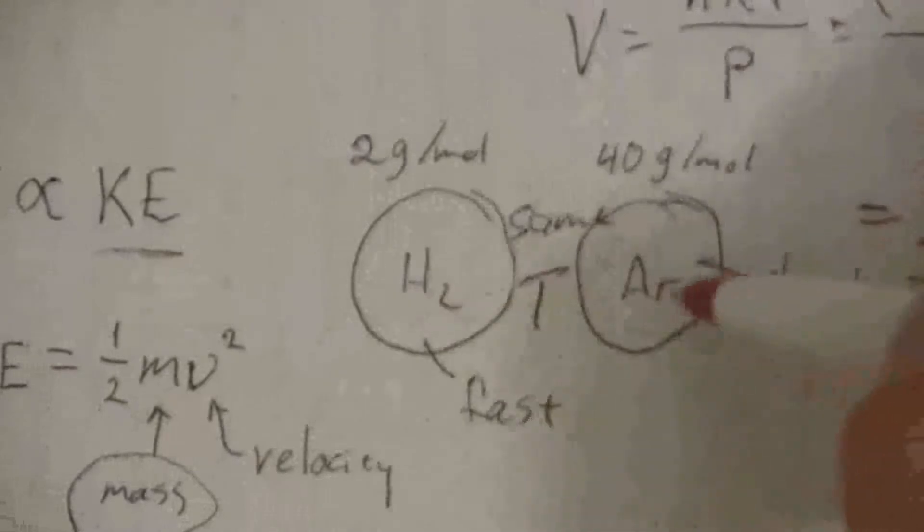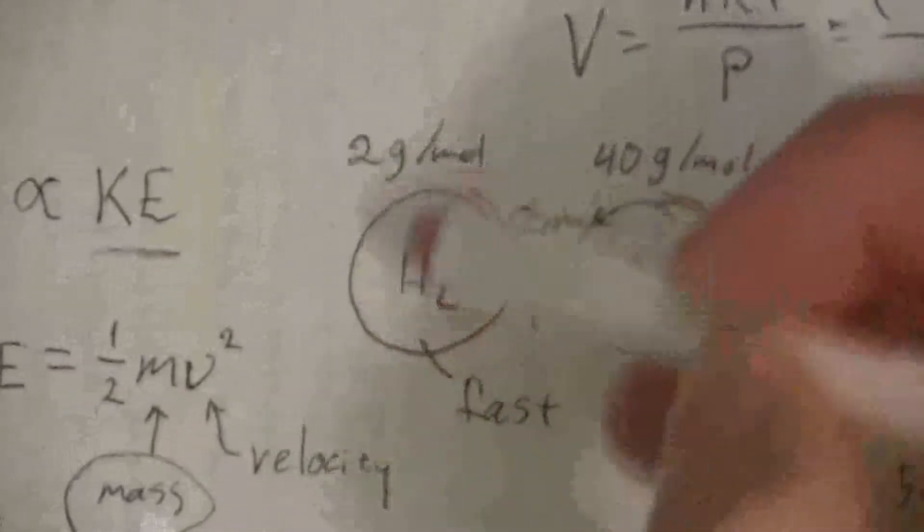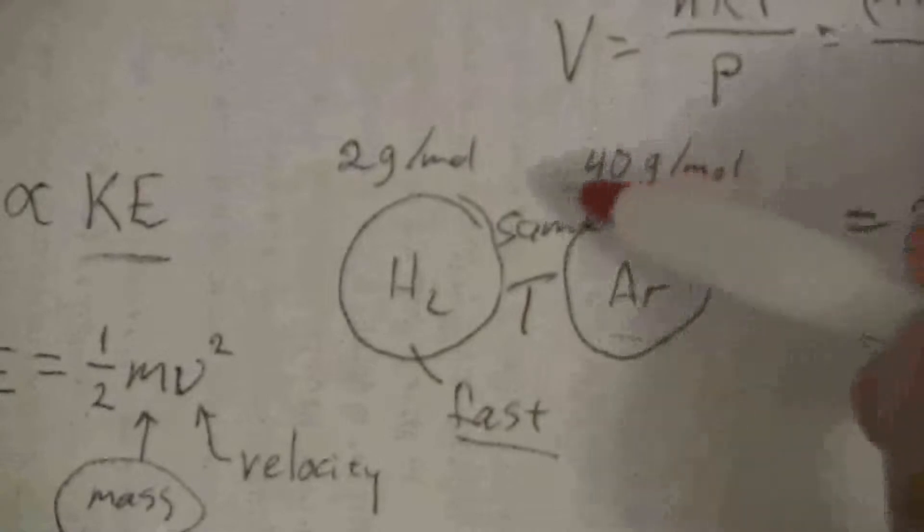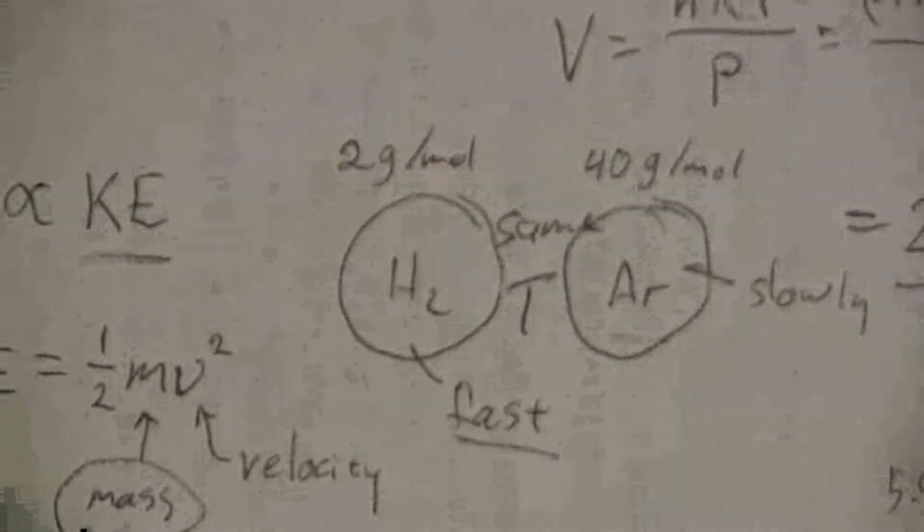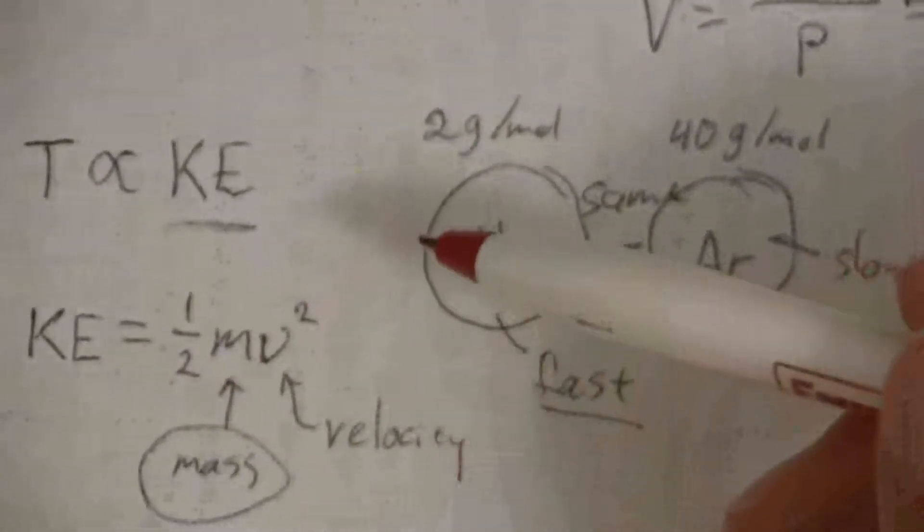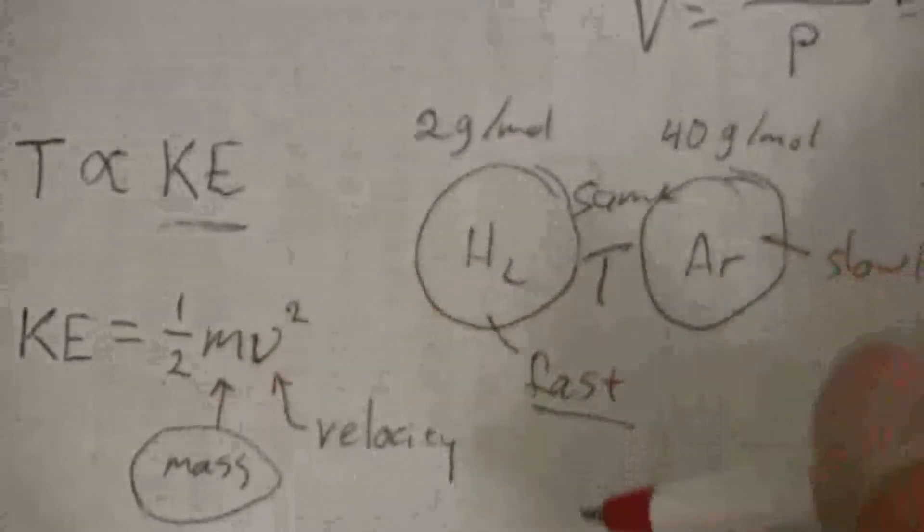If these are both at the same temperature, the hydrogen molecules, they're bouncing around much faster than the argon because the argon atoms are much heavier than the hydrogen molecules. All based on this kinetic energy having that mass component in there.